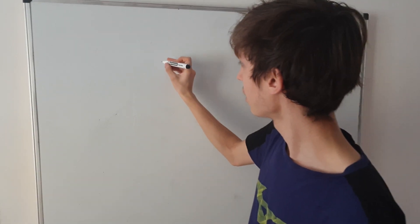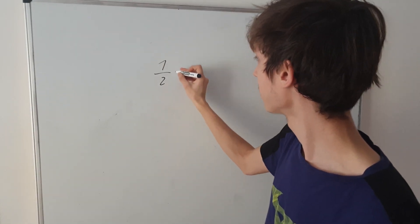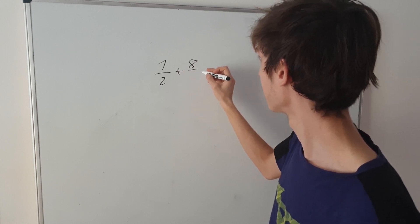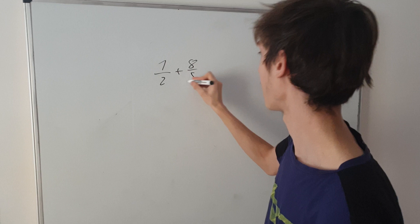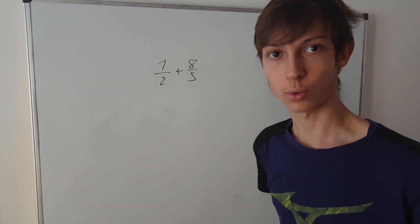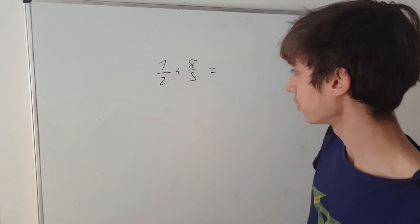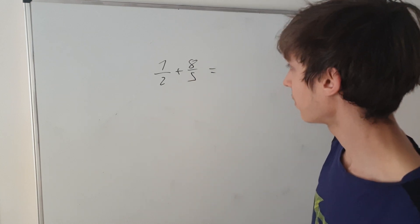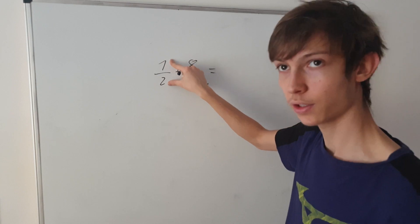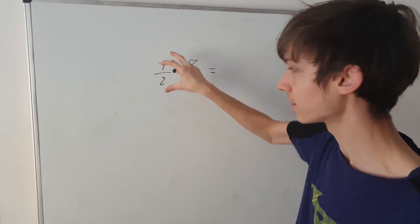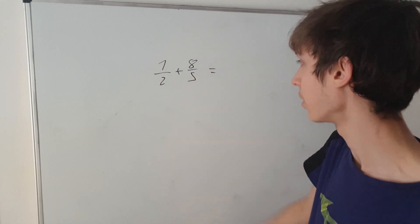And the third one, last one, will be 1 over 2 plus 8 over 5. So, what do we have to do? We have to get both of the bottom numbers to be the same. We can achieve that by taking the individual fractions and multiplying both the lower and the upper. Upper and the lower number by the same number.